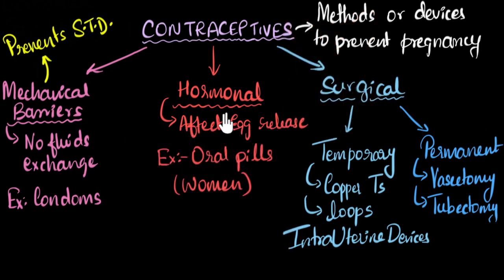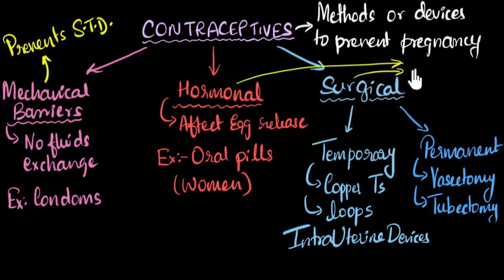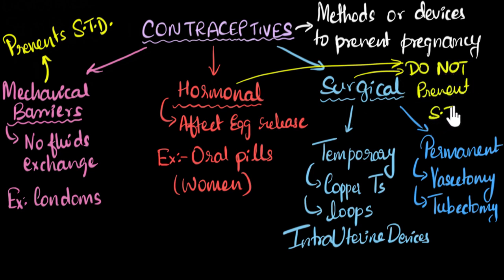Before we wind up, a couple of important points. In hormonal and surgical methods, there are no barriers, so there is still bodily fluid exchange — which means these methods do not prevent STDs. To ensure people don't catch STDs, they always need to use mechanical barriers.